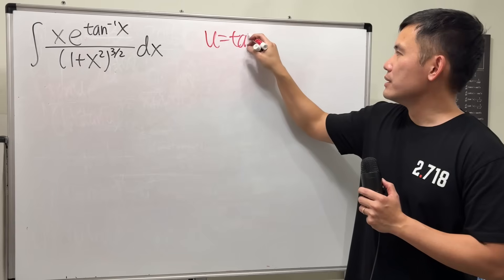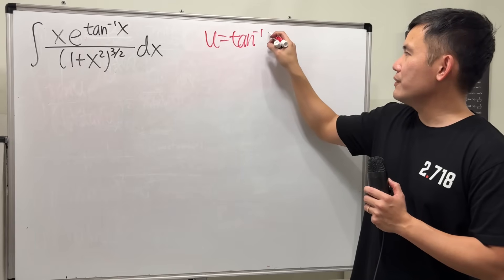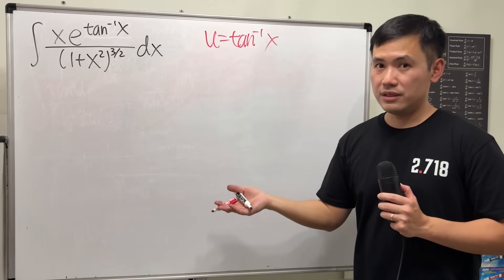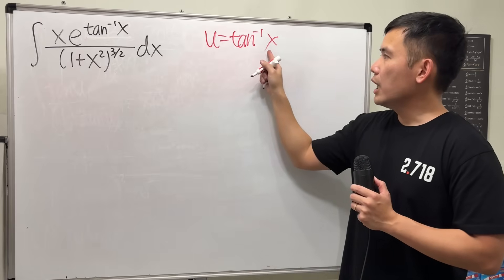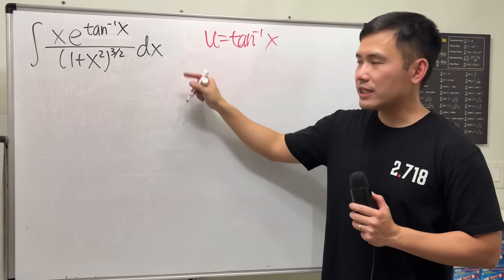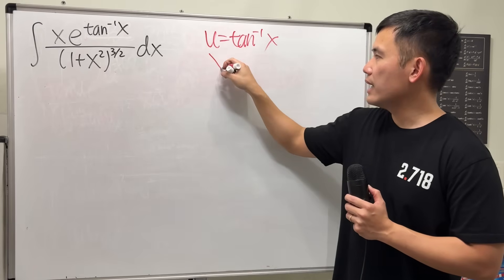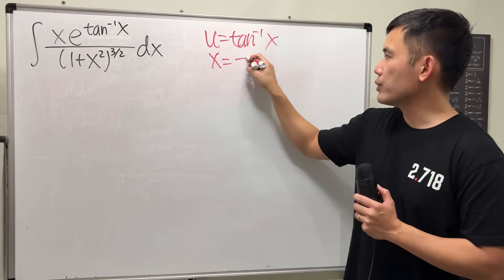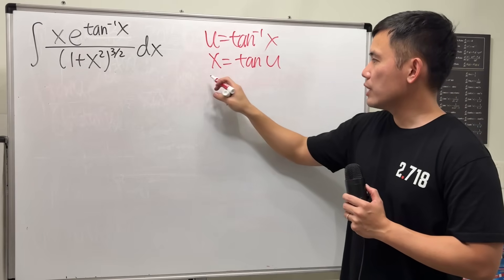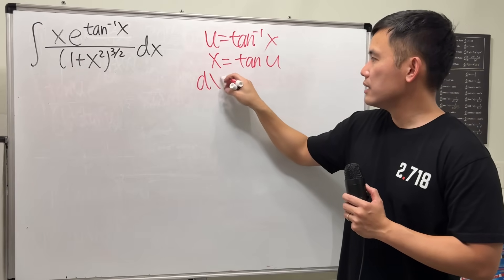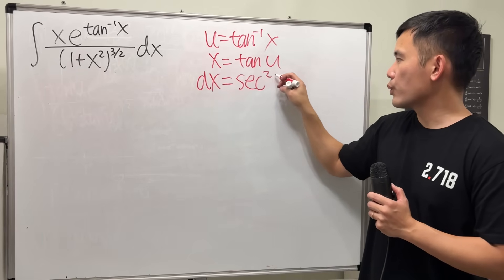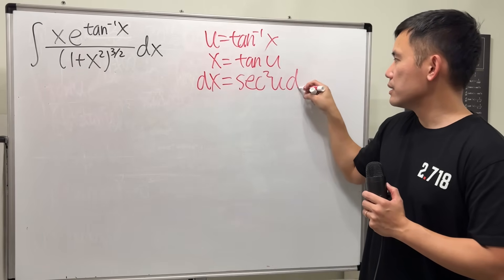u is equal to inverse tangent of x. Applying the inverse to both sides, we get x equal to tangent u. Differentiating both sides, dx is secant squared u, du.